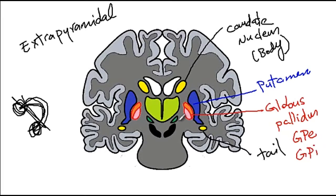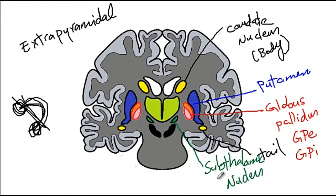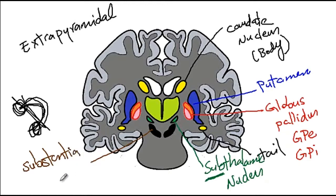The two green structures shown here are the subthalamic nuclei. The name comes from 'sub' meaning under, as this nucleus is located under the thalamus. Finally, we have the substantia nigra — 'substantia' means substance and 'nigra' means black. This structure produces dopamine, and patients with Parkinson's disease, who have destruction of the substantia nigra, have low levels of dopamine in these brain structures.